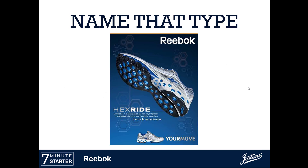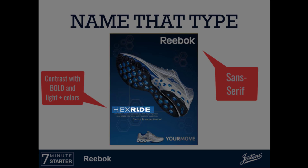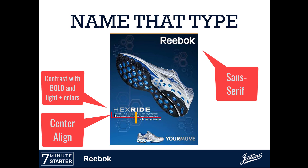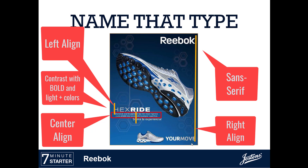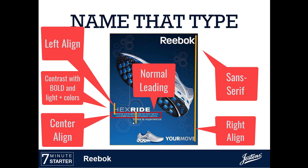In this magazine example, I have sans serif font — I don't see any of those little serif feet. There's contrast shown between the super bold block text and the skinnier text. I've got a center alignment on two elements here. There's also 'Hex Ride' aligned to the left, and 'Reebok' and 'Your Move' aligned to the right. Focusing on those four lines of text, I've got normal leading because there isn't massive space between each of those different lines of text.